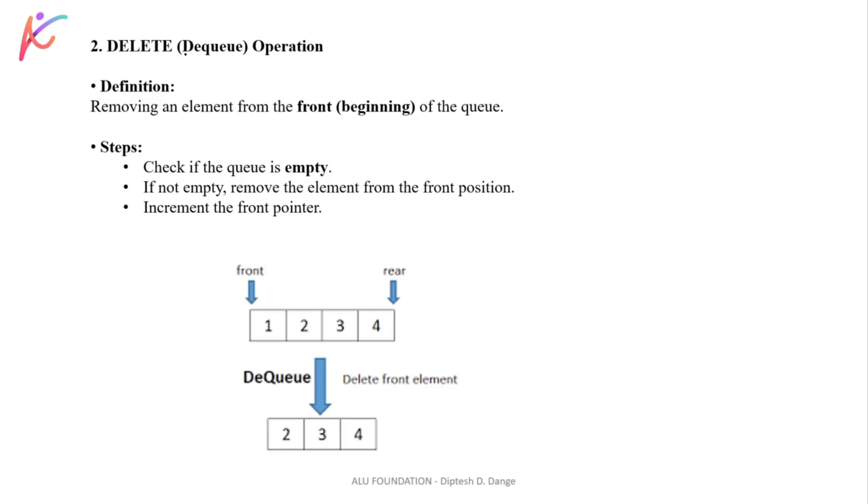Now let's see Delete. Delete means Dequeue - we will remove element from the front end. From the front pointer we will remove element from the Queue. We are understanding these operations with respect to the linear Queue.